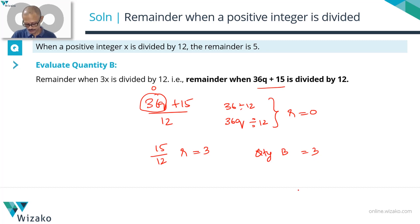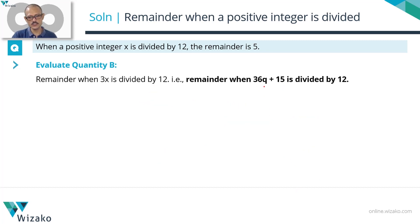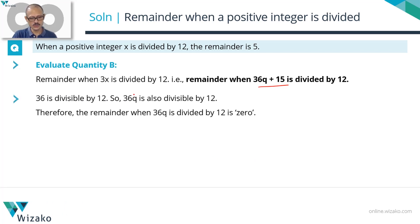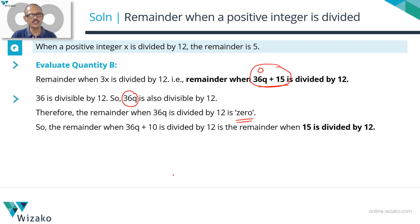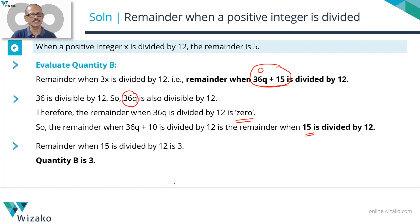To consolidate Quantity B: finding the remainder when 36q + 15 — the value of 3x — is divided by 12. Since 36 is divisible by 12, 36q is divisible by 12 with remainder 0. We then find the remainder when 15 is divided by 12, which is 3. So Quantity B is 3.